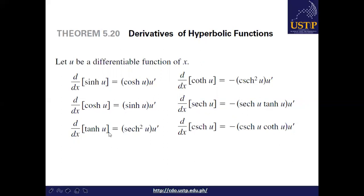The derivative of tanh(u) is equal to sech²(u) · u prime. The derivative of coth(u) is equal to negative csch²(u) · u prime. Remember that the derivatives of coth(u), sech(u), and csch(u) are negative. The derivative of sech(u) is equal to negative sech(u) · tanh(u) · u prime. The derivative of csch(u) is equal to negative csch(u) · coth(u) · u prime.